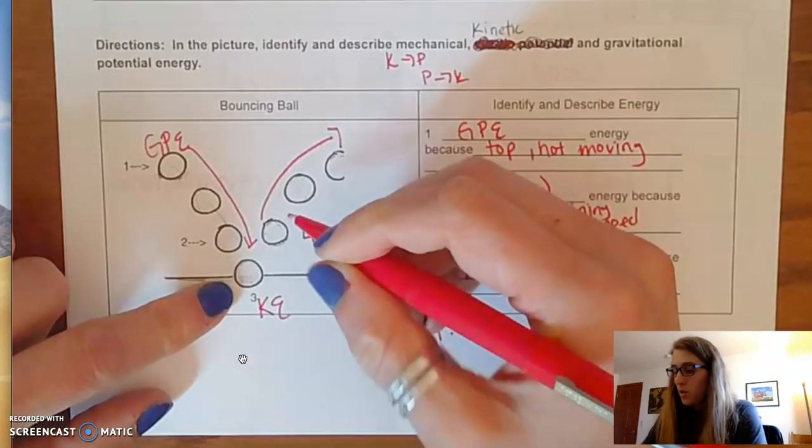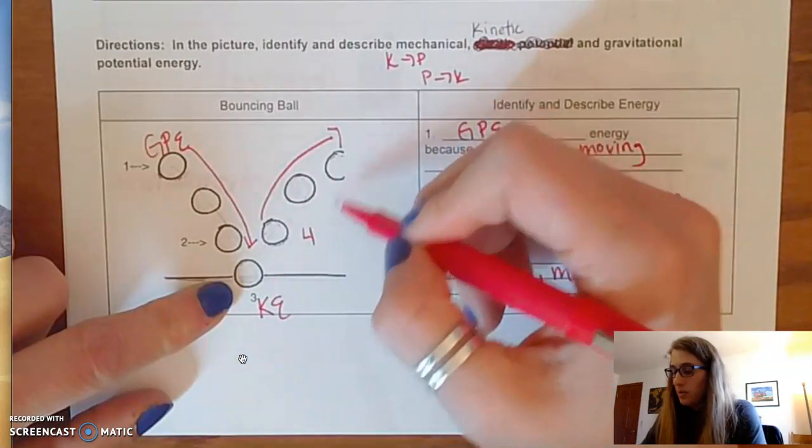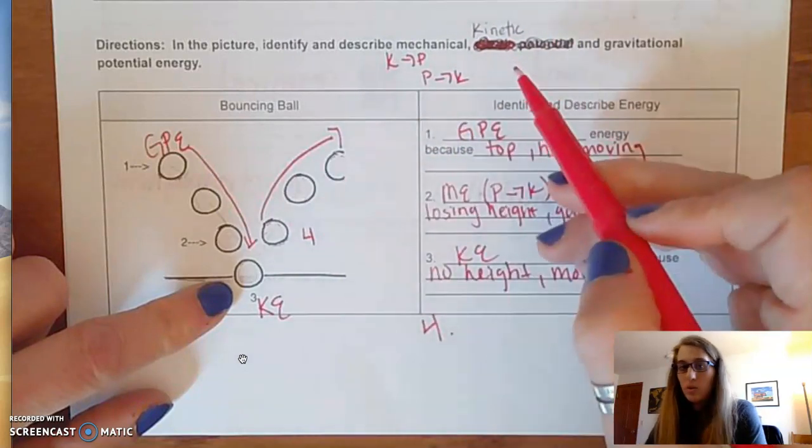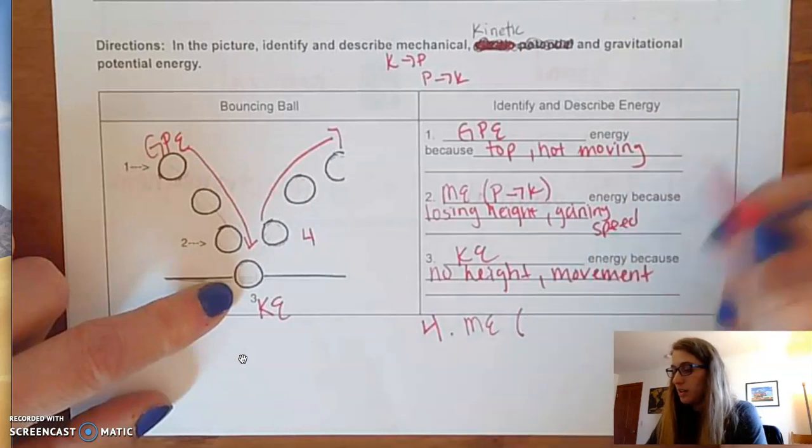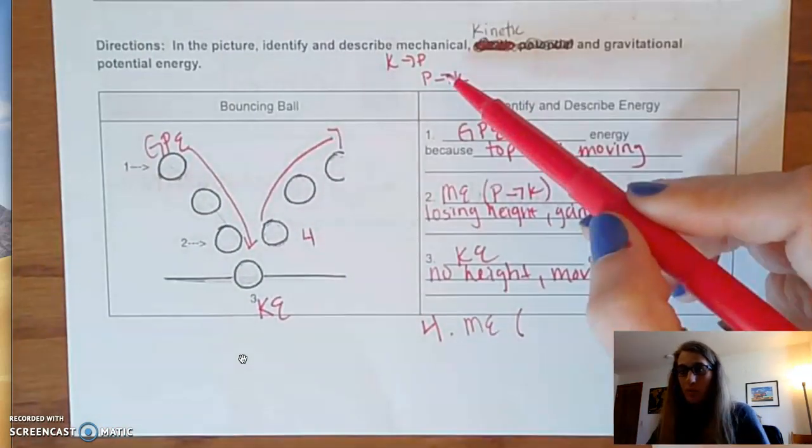And then at spot four, it's going up, so it's in the middle of its bounce. Which one is it? Hopefully you thought to yourself, that must be mechanical. Now we have to figure out K to P or P to K.